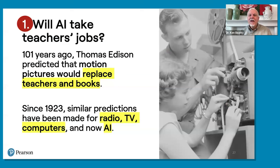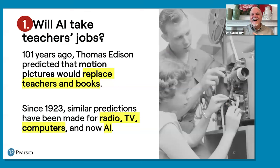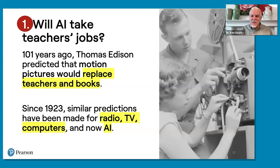First, will AI take teachers' jobs? I look back at Thomas Edison, 101 years ago in 1923. He predicted that motion pictures would replace teachers and books. Did they? No, they didn't — he probably said that because he wanted to sell more motion picture equipment. Since 1923, we hear these predictions over and over: radio will replace schools, TV will replace schools, computers — why should students go to schools when they can just use the computer? And now we're saying the same for AI. I don't buy it for a minute.